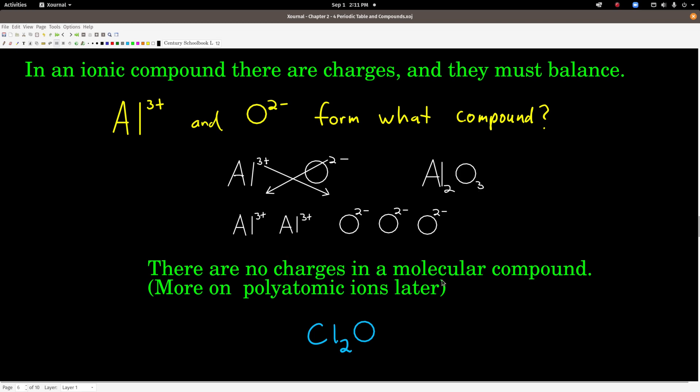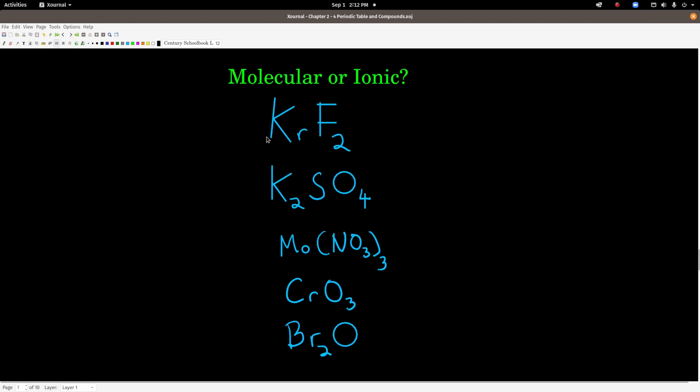In a molecular compound, there are no charges. That's where sometimes people get confused. Ionic compounds have a cation and an anion. Molecular compounds, non-metals only, there are no charges. This is an example of a molecular compound. No charges, chlorine doesn't have a negative charge, oxygen doesn't have a negative charge. This just says that in this molecular compound, we have two chlorine atoms and one oxygen atom.